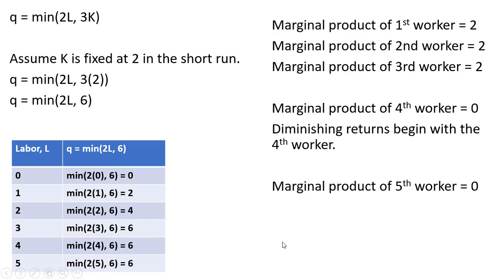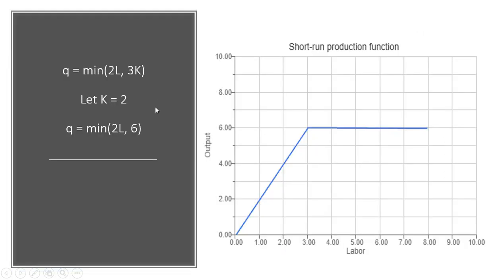Let's graph this short-run production function. Here's our production function in the short run when K is 2, graphing those values from the table. When L is 1, output is 2. When L is 2, output is 4. When L is 3, output is 6. Any quantity of labor beyond 3, we can't produce more than 6 units of output.